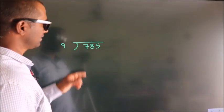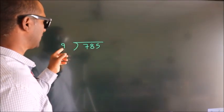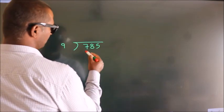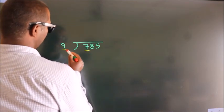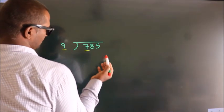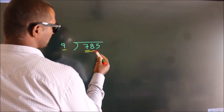How to divide 785 by 9? Here we have 7, here 9. 7 is smaller than 9, so we should take two numbers: 78.